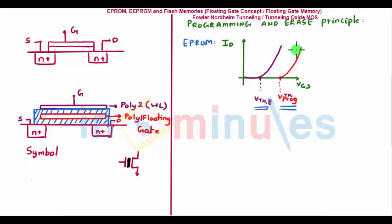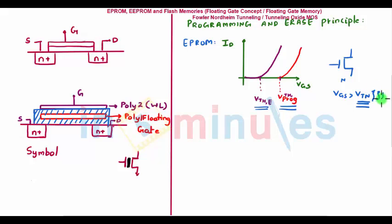We'll understand how you can get a threshold voltage of such a high value. Basically, for this NMOS transistor, when VGS is greater than VTN the transistor turns on. I want to make the threshold voltage so high that when I apply VDD at the gate, the transistor will still not turn on because the threshold voltage is higher than VDD — and in doing so we'll be able to program our EEPROM. So, what we understood from this part: we need to increase our threshold voltage, and EEPROM revolves around storing charge on the floating gate. Keep these two points in mind.